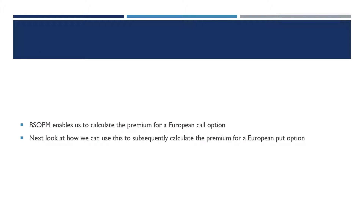So the Black-Scholes option pricing model enables us to calculate the premium for a European call option. What we next might want to do is look at how to get the premium for a European put option. It turns out the Black-Scholes model is still relevant to this, but we'll need to look at the put-call parity theorem, which enables us to establish a relationship between call options and put options. That allows us to price put options and potentially identify arbitrage opportunities if market prices don't align with the theoretical prices for these options.